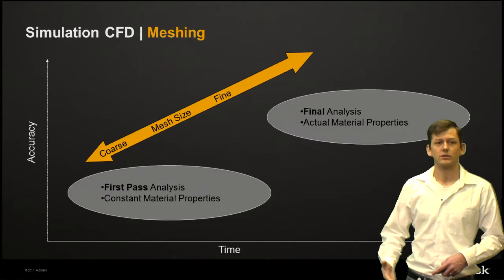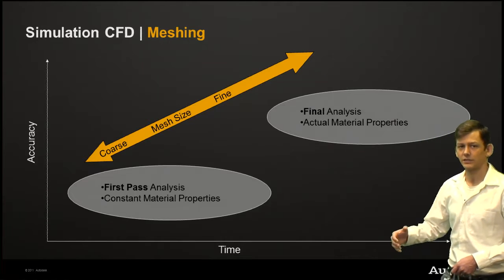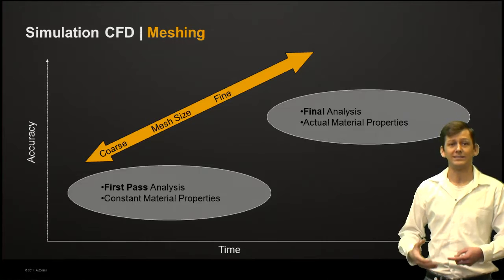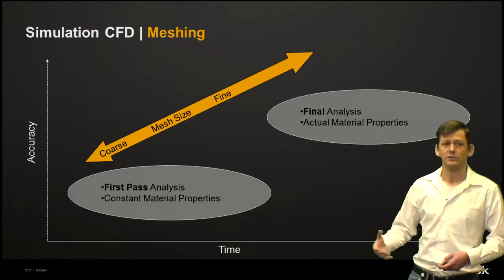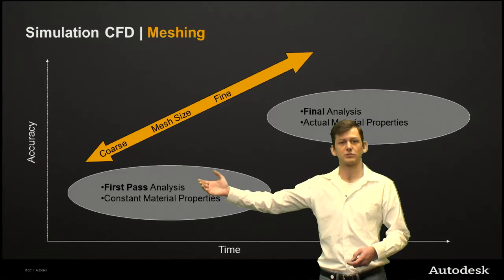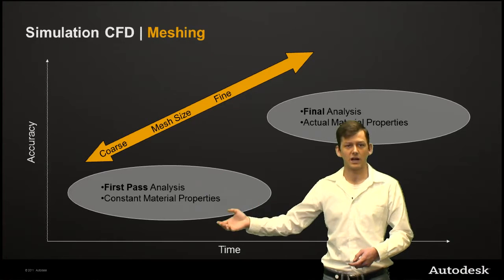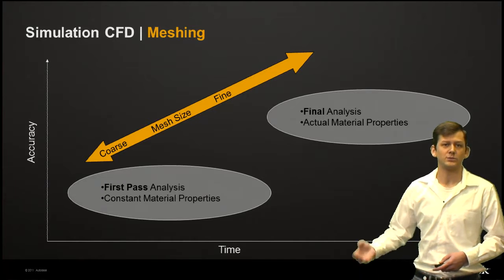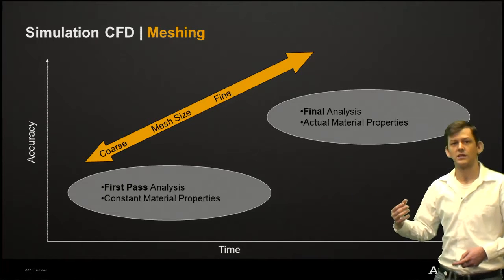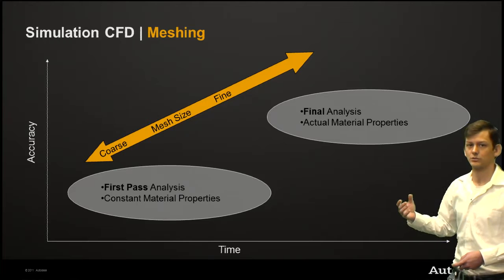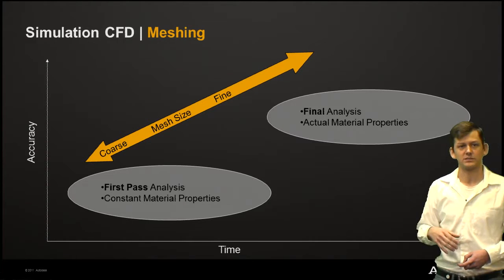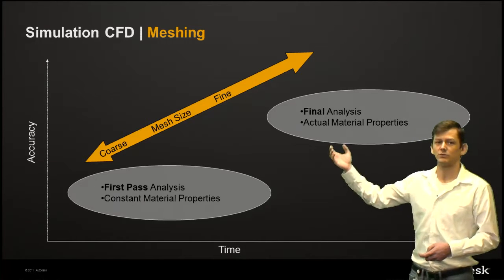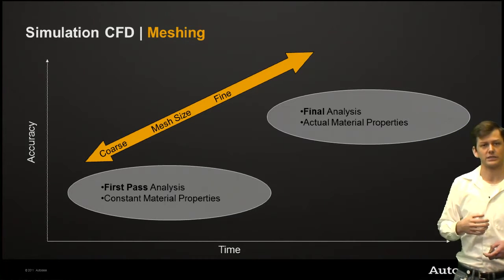What we're shooting for overall, as you're looking at your first pass analysis, that proof of concept to make sure where we need to refine the mesh, we can start out with a relatively coarse mesh. If we're doing something with constant property materials, we can typically use a slightly coarser mesh. But as we go for that final analysis, or if we're trying to match test results using actual material properties that are going to vary with respect to temperature, we're going to want to refine the mesh, have a tighter mesh to capture all of those gradients.